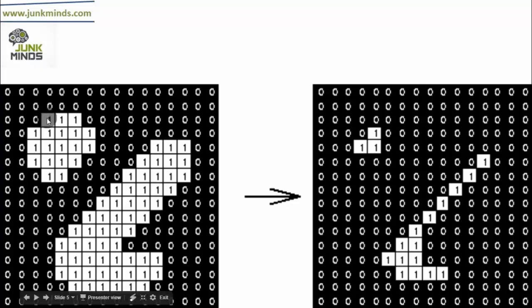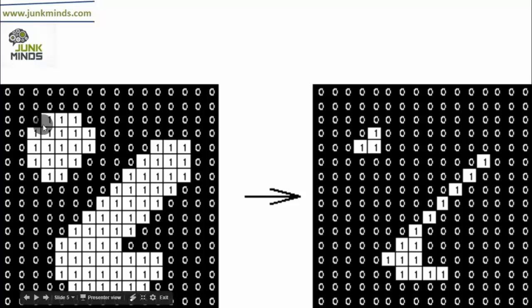For each pixel in the foreground, we consider all of the eight connected surrounding pixels. If all of them are one — that is, all of them are in the foreground — we keep this pixel as one; else we put it as zero. For example, one pixel is set to zero because not all neighbors are foreground, while another pixel that has all eight connected regions as one is retained as one. This process is continued to form the output.